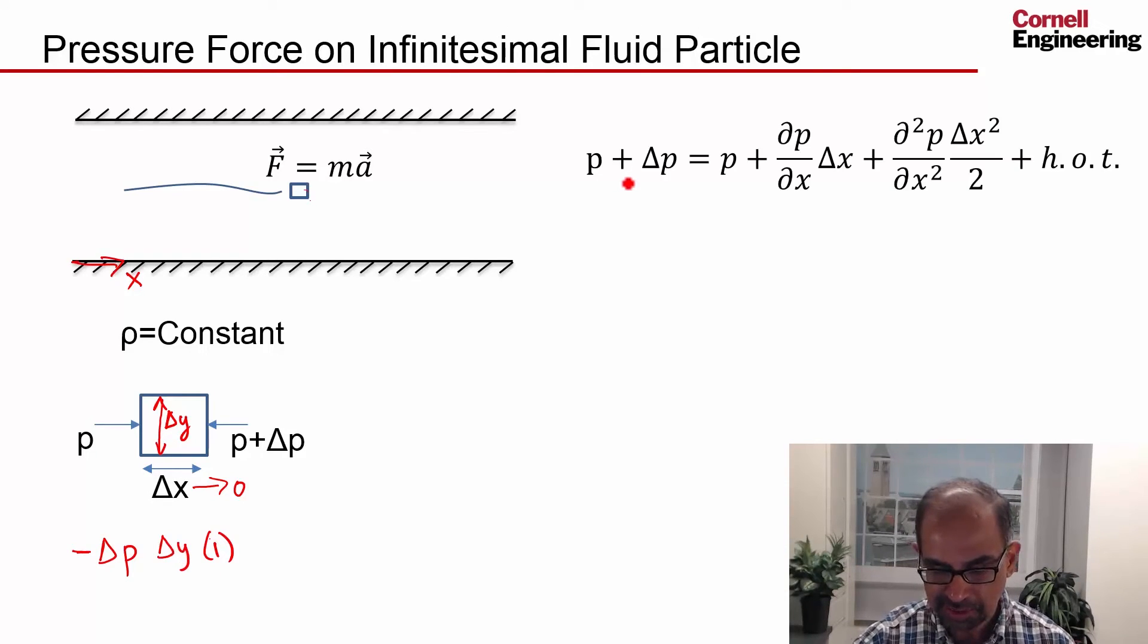I can write the pressure on the right face in terms of the pressure on the left face using a Taylor series expansion. That's the same game we've been playing. That's the first term in the Taylor series expansion. That's the second term. In the limit as delta x tends to zero, these are going to drop out, which means that delta p is given by the gradient of pressure in the x direction times delta x.